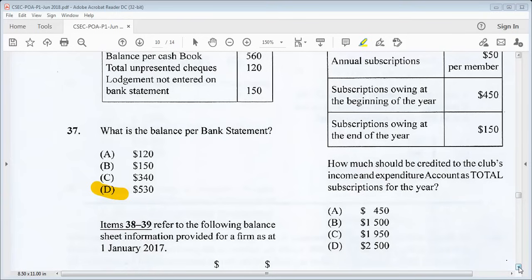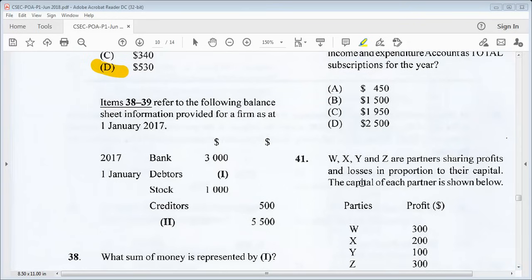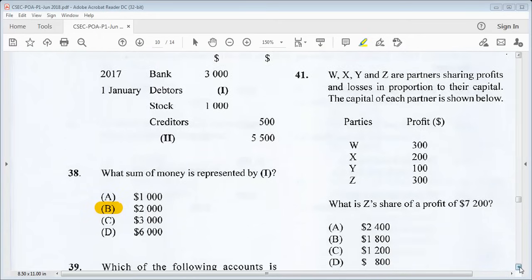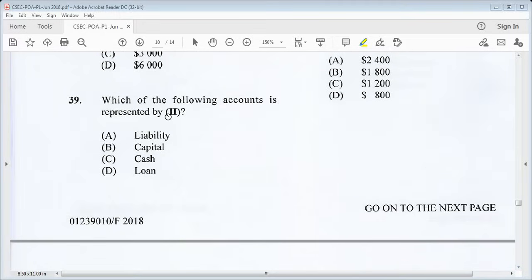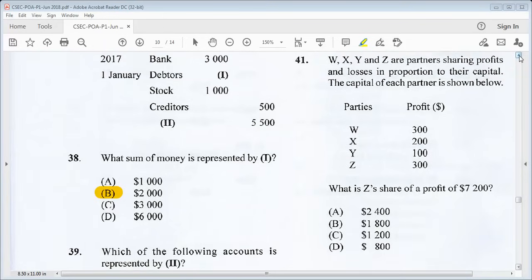Let's go on to 38. Items 38 to 39 refer to the following balance sheet information provided for a firm as of 1st of January 2017. We're going to fill in the space here, debtors, 1 and 2 here, what those represent. What sum of money is represented by 1? Number 1, which is our debtors, we know that would be $2,000. What does 2 represent? Which of the following accounts is represented by 2? We know that it's our capital.